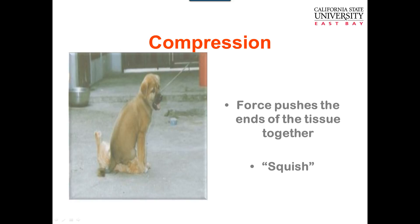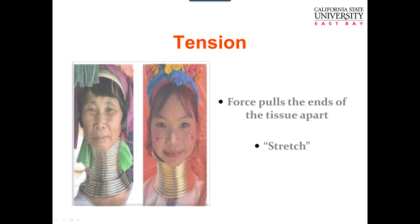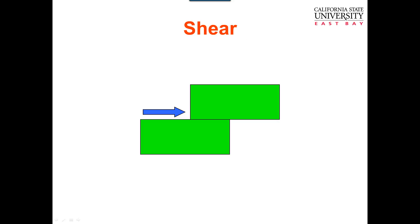Tension is also an axial force, which means it's normal or longitudinal. The force tends to pull apart the molecules that bind the object together, so you get micro tears and micro cracks. The object tends to deform by stretching or elongating. Tendons, ligaments, bone, muscle, and cartilage can all be under tension. Think of it like old sweatpants — you pull the elastic and it crinkles. Here's an image of tension over time: you can pull the ends of the tissue apart.